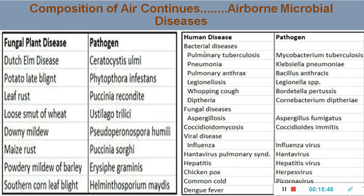Human diseases transmitted through contaminated air include bacterial diseases such as pulmonary tuberculosis caused by Mycobacterium tuberculosis, pneumonia caused by Klebsiella pneumoniae, pulmonary anthrax caused by Bacillus anthracis, legionellosis caused by Legionella species, whooping cough caused by Bordetella pertussis, and diphtheria caused by Corynebacterium diphtheriae. All these are airborne bacterial diseases.